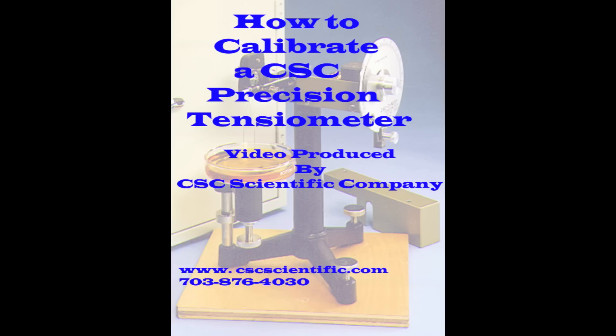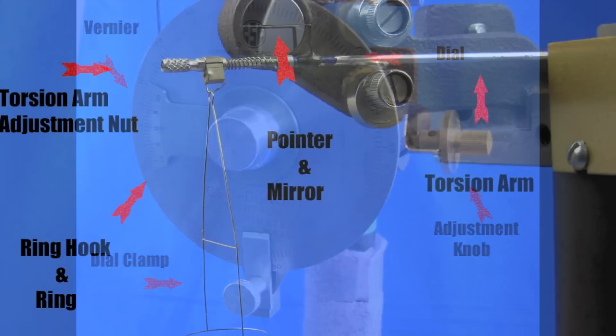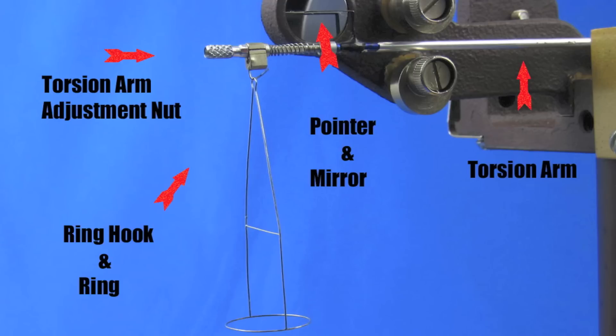Our first task is to identify the key components of the tensiometer. They are, as indicated by the arrows: the dial clamp, the adjustment knob, the vernier, the torsion arm, the mirror line and arm pointer, the ring hook and the ring, and the torsion arm adjustment nut. You start the process by attaching the ring to the ring hook. This will move the torsion arm down to the stop.